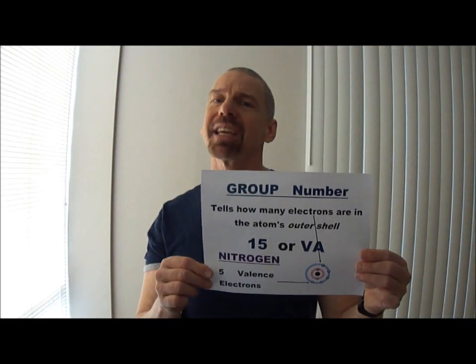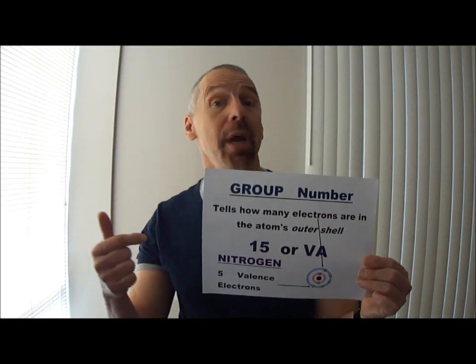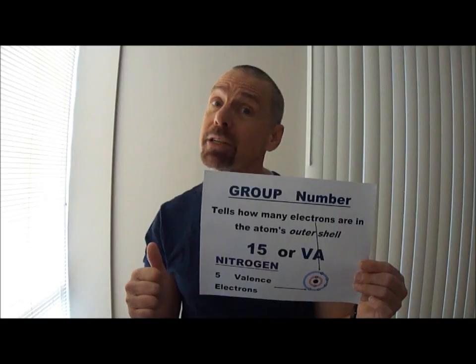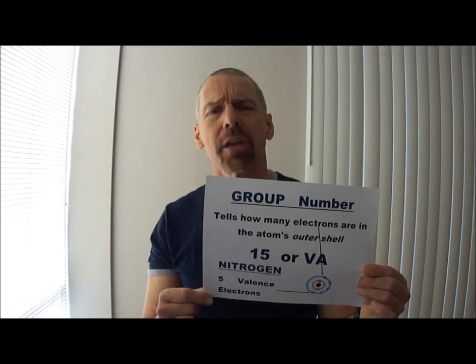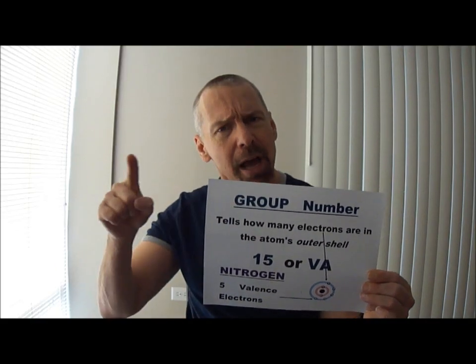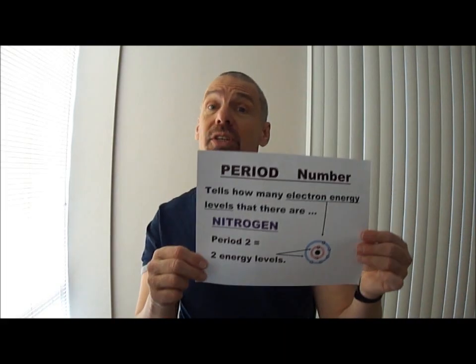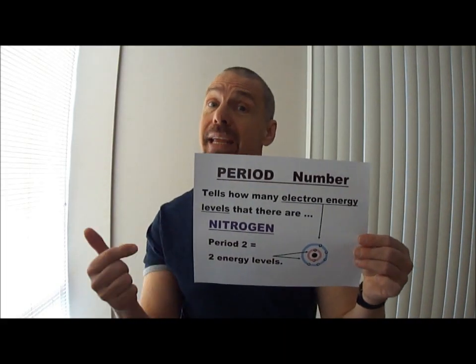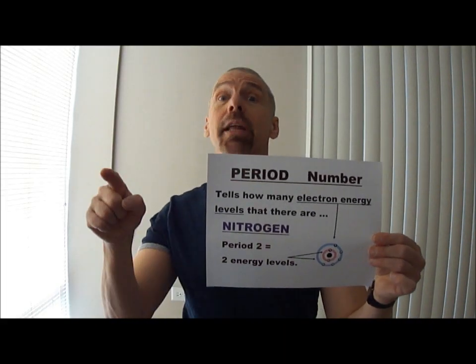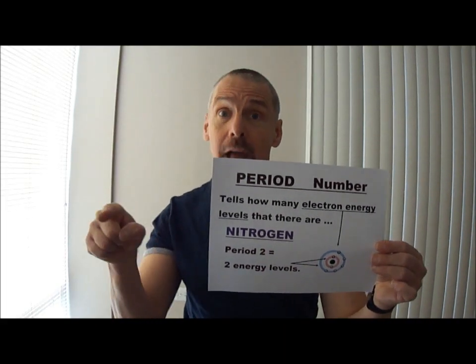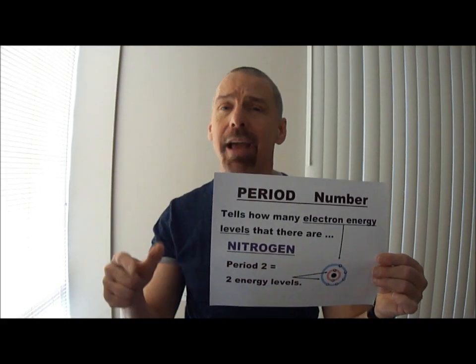The group number tells us how many electrons are in the atom's outer shell. The period number tells us how many electron energy levels there are.